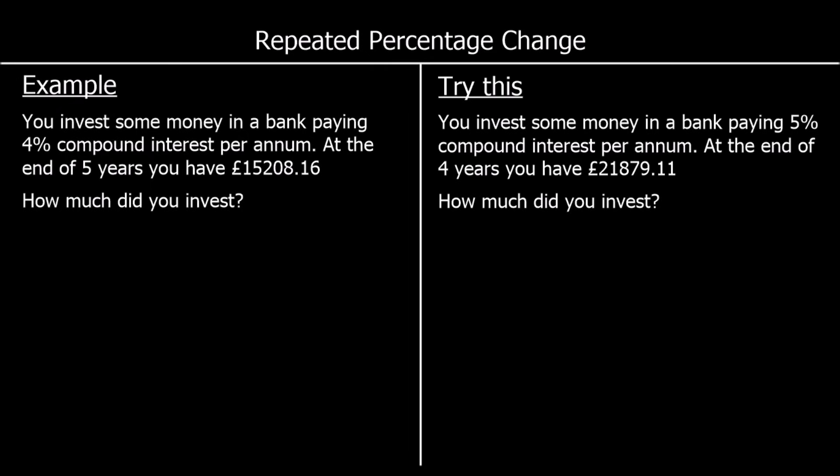This question says: you invest some money in a bank paying 4% compound interest per annum, so you get 4% interest every year. At the end of 5 years, you have £15,208.16. How much did you invest?